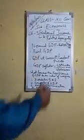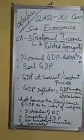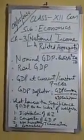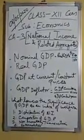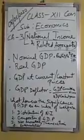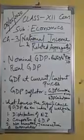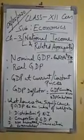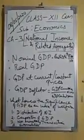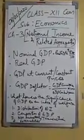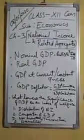Starting with nominal GDP. Nominal GDP refers to GDP at current prices. It is the market price of the final goods and services produced within the domestic territory of a country during an accounting year, as estimated using the current year prices. Current year prices are the prices prevailing during the year of estimation.